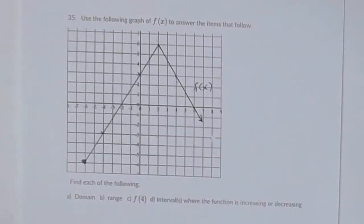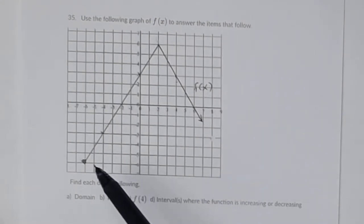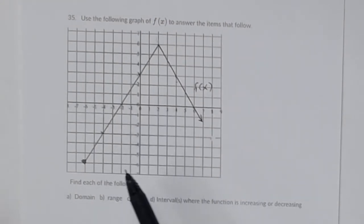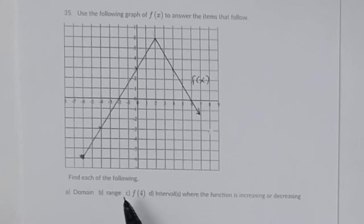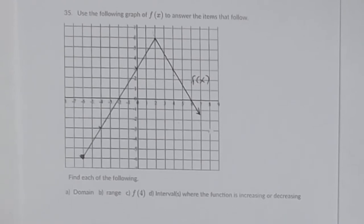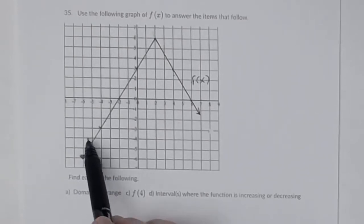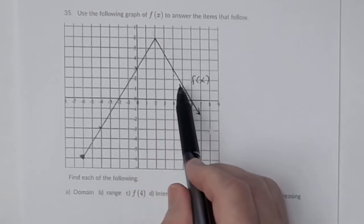This is the key to problems 35 through 38. In number 35 you're given the graph of a function f of x and you want to find the domain, the range, f of 4, and the intervals where the function is increasing or decreasing.